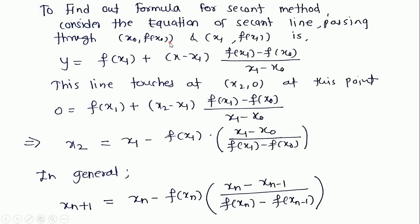Now let us find out the formula for the secant method. Consider the equation of the secant line passing through the points x0 comma f of x0 and x1 comma f of x1. The equation of the secant line is: y equals f of x1 plus x minus x1, times f of x1 minus f of x0, divided by x1 minus x0.